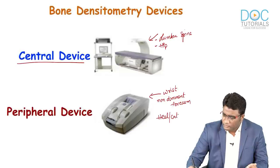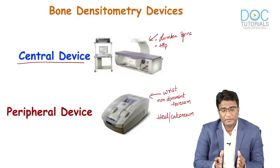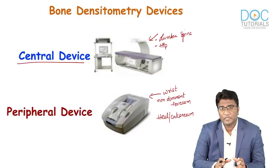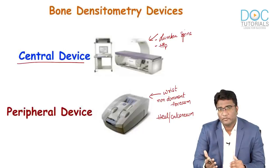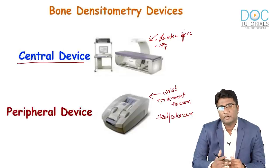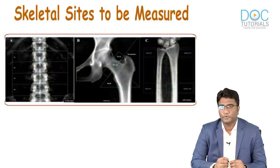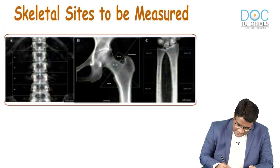Peripheral DEXA is used especially when central DEXA cannot be done — for example when the patient is morbidly obese — or when the patient has hyperparathyroidism and wrist evaluation is needed. The different sites used to measure bone mineral density are the same sites prone to osteoporotic fracture. The preferred site is the lumbar spine.